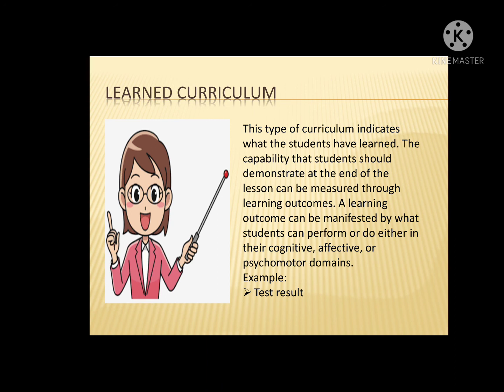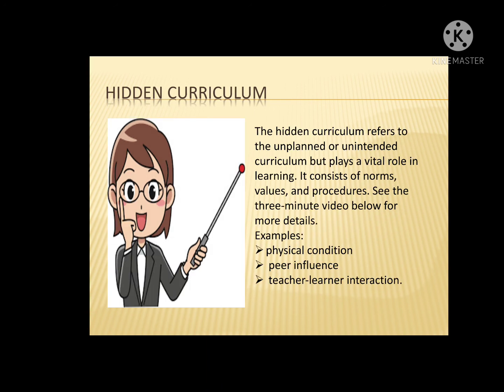The last type of curriculum is the hidden curriculum. The hidden curriculum refers to the unplanned or unintended curriculum but plays a vital role in learning. It consists of norms, values, and procedures. Examples of the hidden curriculum include physical condition, peer influence, and teacher learning instruction.